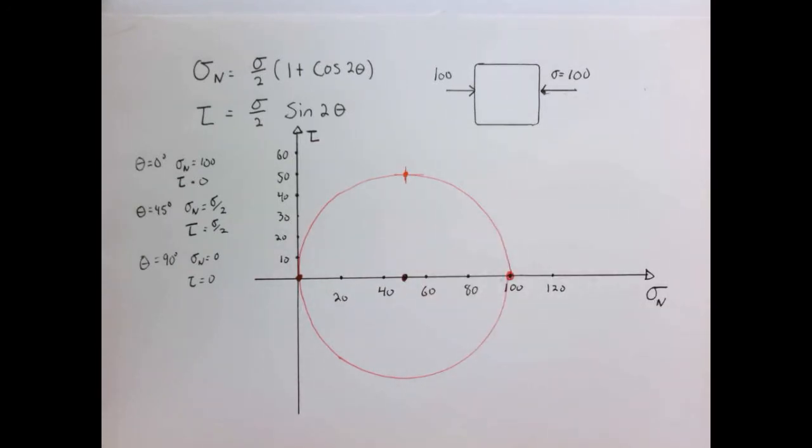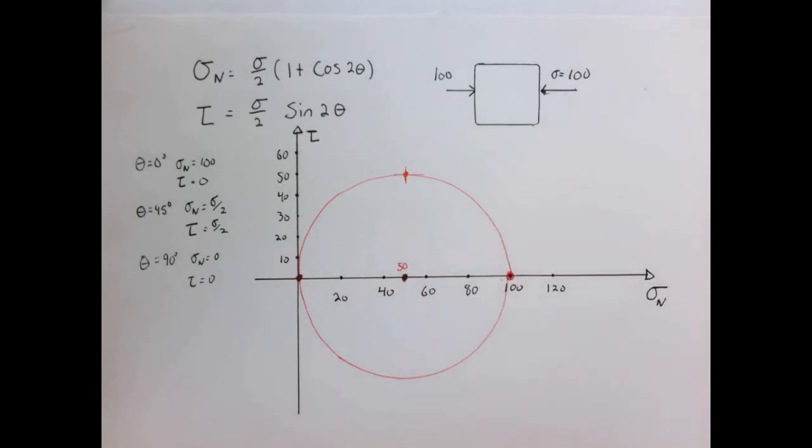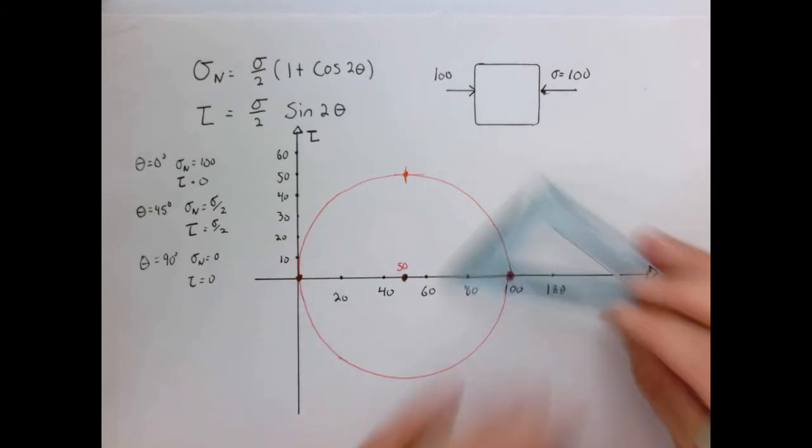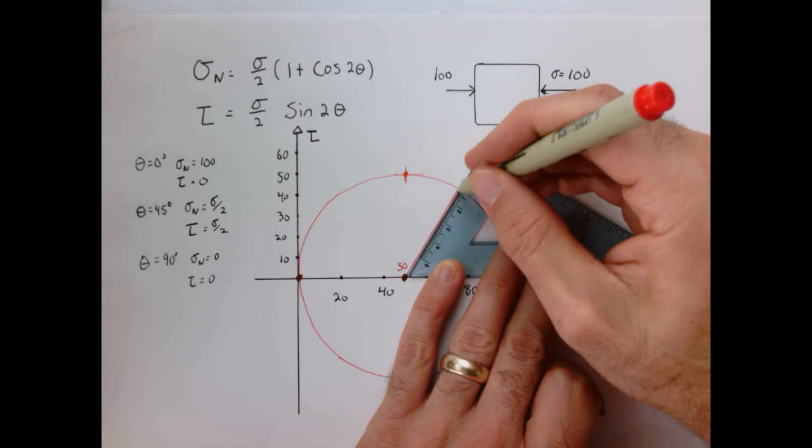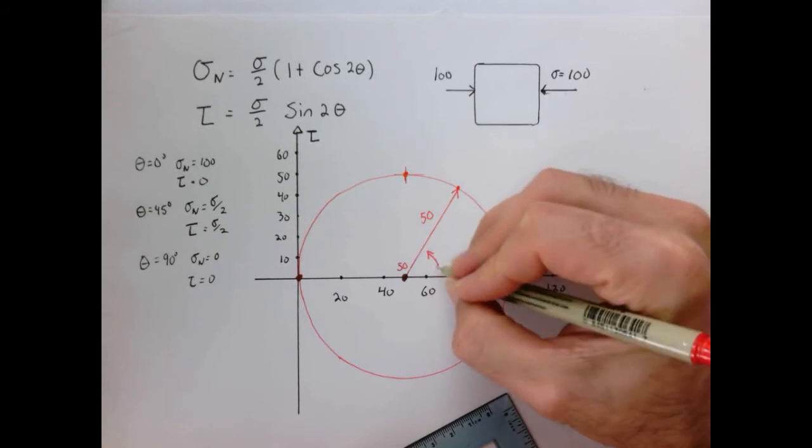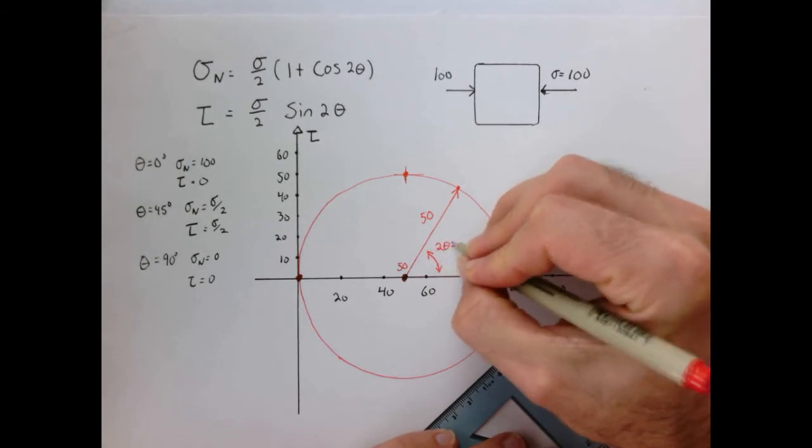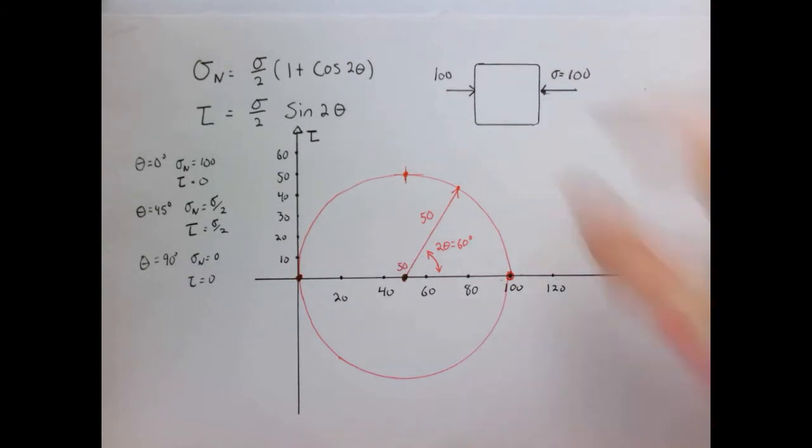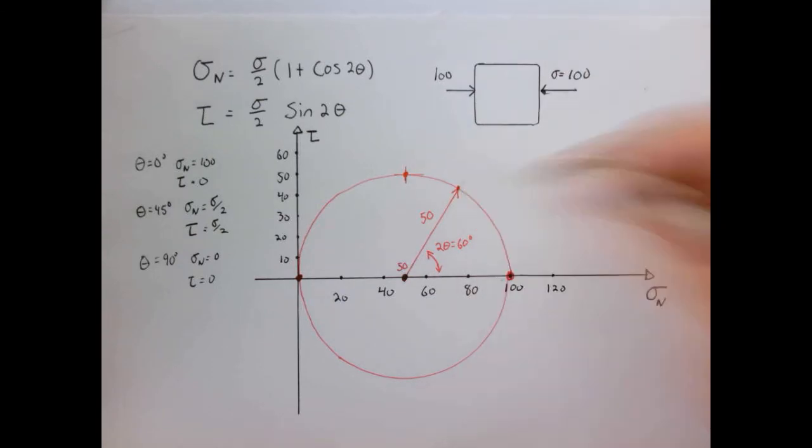So now we have a representation of the state of stress as a function of angle. We have a circle where the center of the circle is at 50 and the radius of the circle is 50 because we go to 100 and zero here. This angle here, I just use my 60 degree triangle, means 2 theta is equal to 60 degrees. So what this means is we take our cube and we rotate it now by 30 degrees. This point here describes the state of stress.